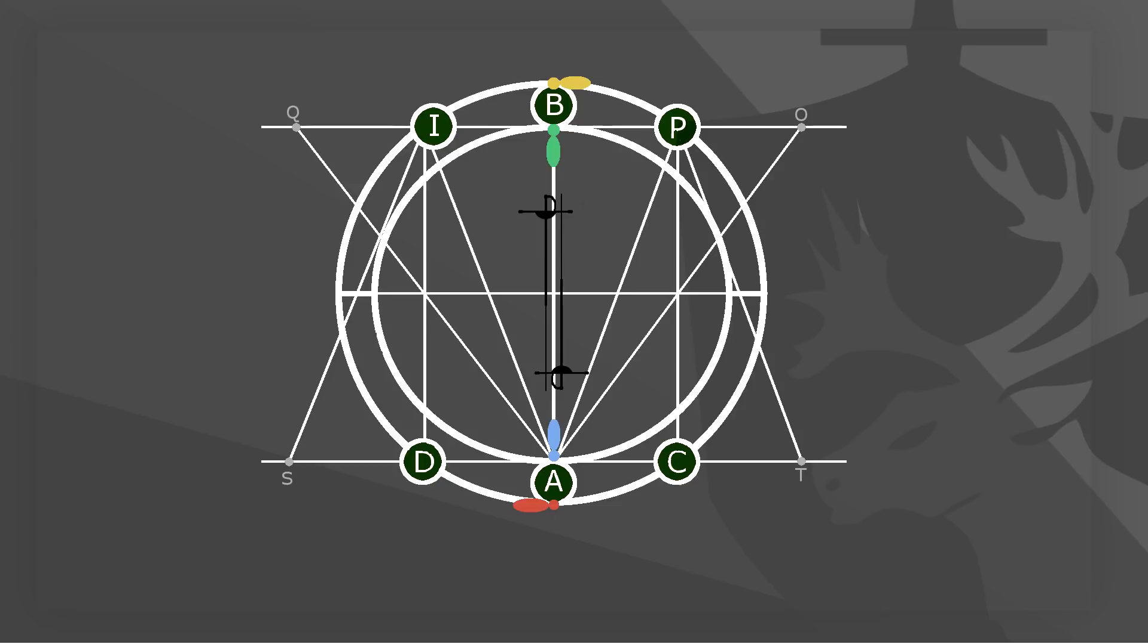Then repeat the same from above. Drawing lines from B to S, D, C and T. This will create all intersections required to describe all the necessary points for Radha.